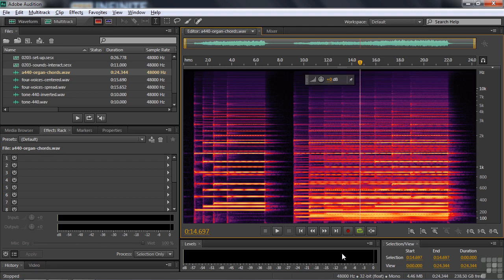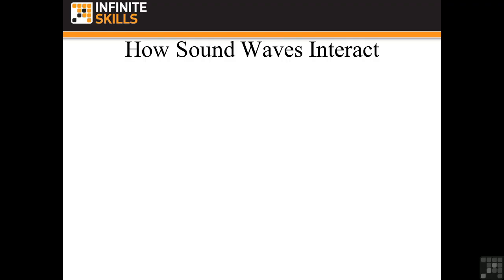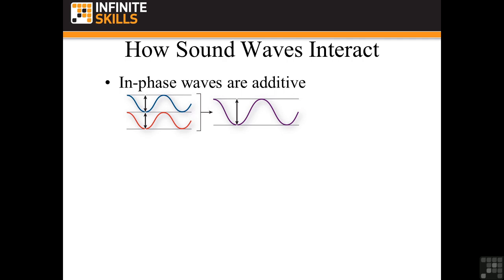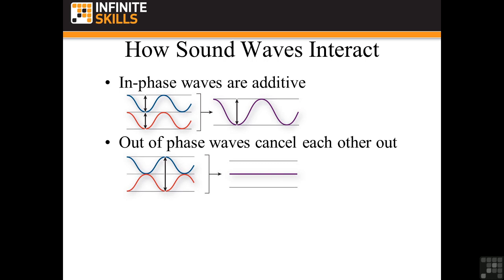Let me show you some of the theory behind this. So how do sound waves interact? In-phase waves are added. That means if you have waves that are exactly equal, the bottom of one wave combines with the bottom of the other to make the dip even larger, and the top combines with the top to make the peak even higher. So you double the overall amplitude when you combine those two things together. Although you will rarely encounter two files that are exactly in-phase and exactly additive, that's just the way it works. Out-of-phase waves cancel each other out — if the dip of one matches the rise of the other, they add together to be zero.